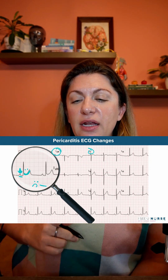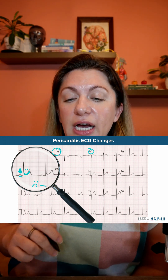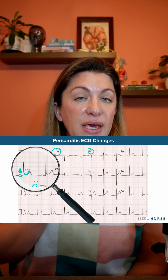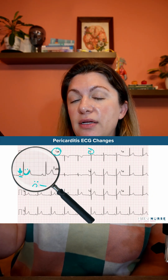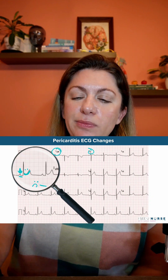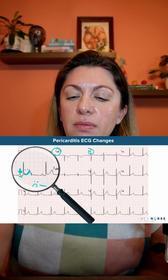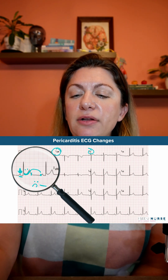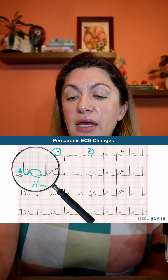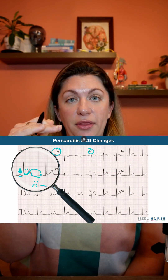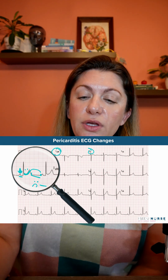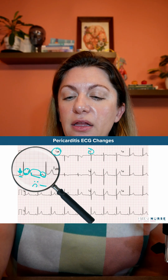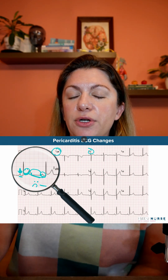The last thing to cover is what is called TP segment downsloping. If you look at the end of your T wave and the beginning of your P wave, this is the TP segment. The downsloping just means that it is not flat on the isoelectric line. The reason for this is that the PR segment depression and the ST elevation together create this downsloping appearance.